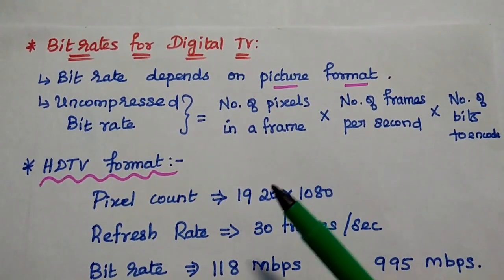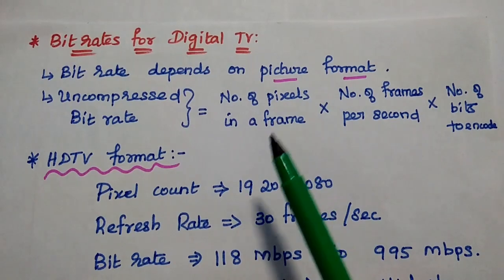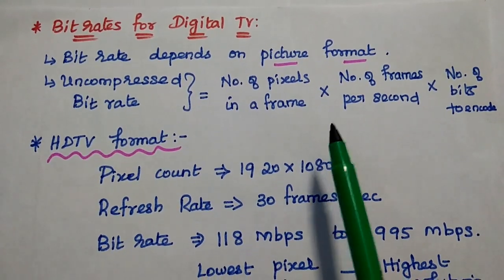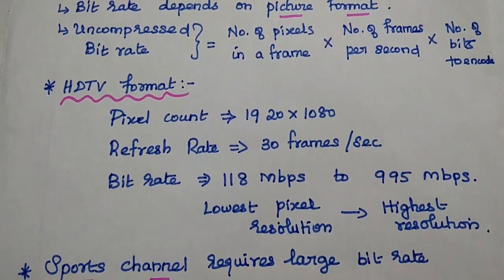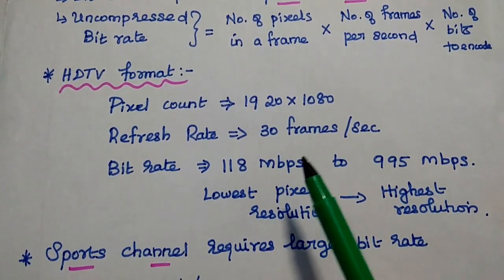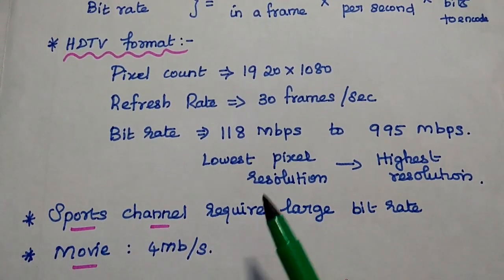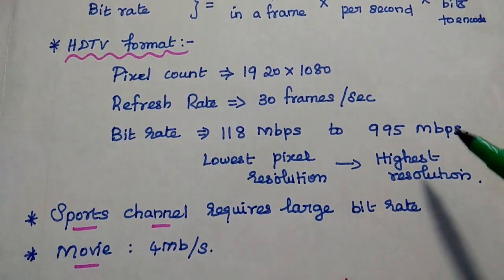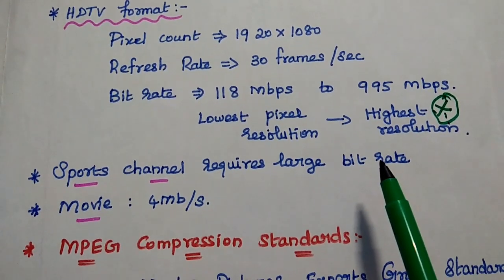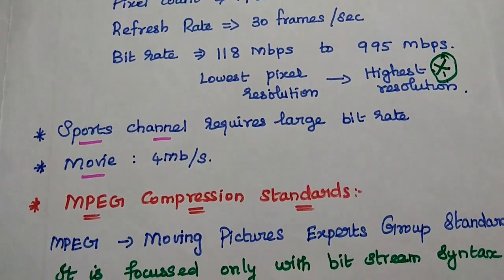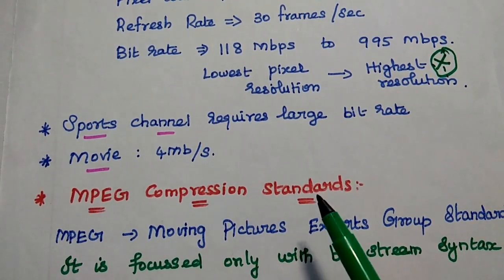For digital TV, the bit rate depends on the picture format. The uncompressed bit rate is the product of the number of pixels in a frame, the number of frames per second, and the number of bits used to encode each pixel. For high definition TV format, the pixel count is 1920×1080 with a refresh rate of 30 frames per second, giving a bit rate ranging from 118 Mbps to 995 Mbps — from lowest to highest pixel resolution. For a sports channel, a large bit rate is needed due to high motion, while a reality show may only require 4 Mbps.